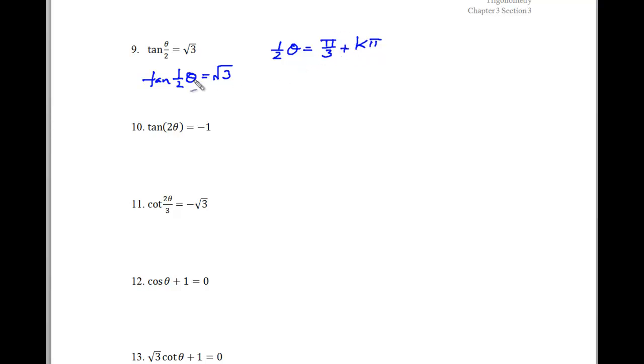But I need to finish solving for theta by getting theta by itself, and I'm going to do that by multiplying everything by 2. In multiplying everything by 2 I now have theta is equal to 2 pi over 3 plus in this case 2 k pi. Since my omega has slowed the graph down, it's going to take me twice as long to get through a complete cycle. So my cycle is doubled to 2 k pi.